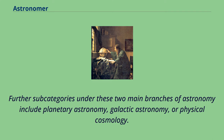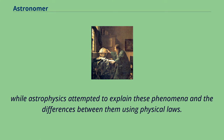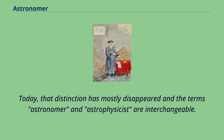Further subcategories under these two main branches of astronomy include planetary astronomy, galactic astronomy, or physical cosmology. Galileo is often referred to as the father of modern astronomy. Historically, astronomy was more concerned with the classification and description of phenomena in the sky, while astrophysics attempted to explain these phenomena using physical laws. Today, that distinction has mostly disappeared and the terms astronomer and astrophysicist are interchangeable.